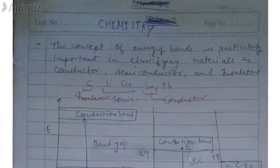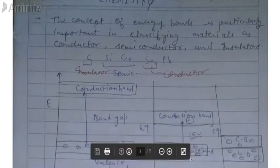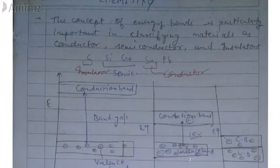First of all, we are going to talk about the energy band. The energy band concept is mainly related to semiconductors, conductors, and insulators, which are classified in the carbon family: carbon, silicon, germanium, tin, and lead.